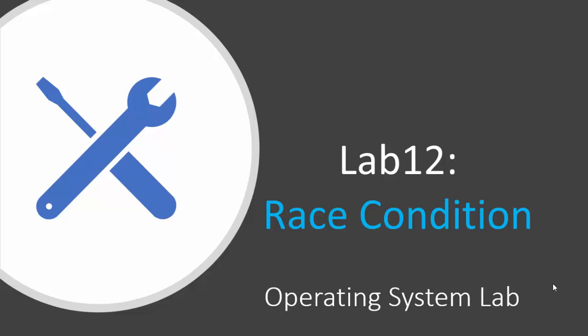Hello everyone. Welcome to lab number 12. Today we are going to learn about how to simulate a race condition with a program. There are two things required before you start on with this lab. First, you need to know the basic theory of what a race condition is, because I am not going to discuss that in this lab. The link to the video tutorial where I have discussed the race condition in detail is mentioned in the description. Second, you need to know how to create threads, because we are going to implement this concept of race condition with the help of threads. I have already uploaded a program on how to create threads, so you can refer that. Make sure you know both these things before starting on with this tutorial.